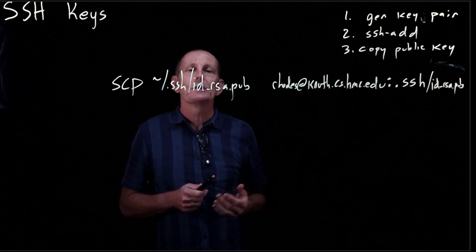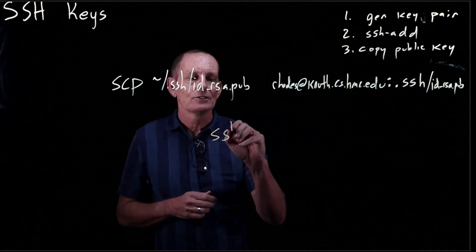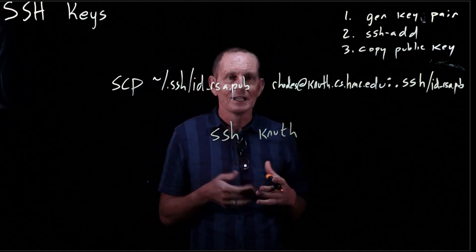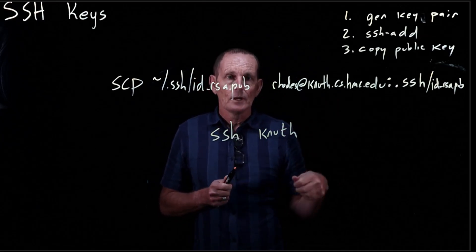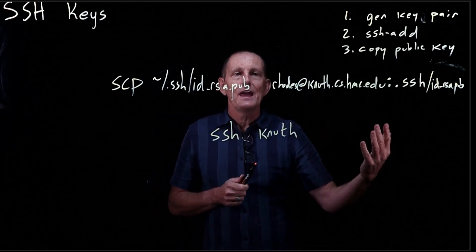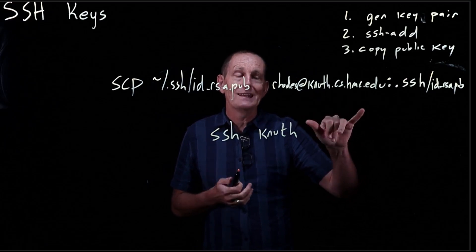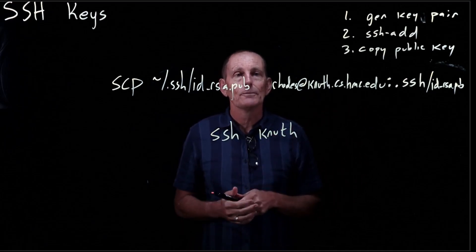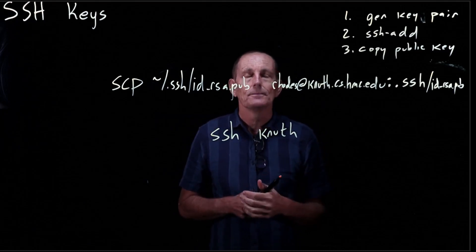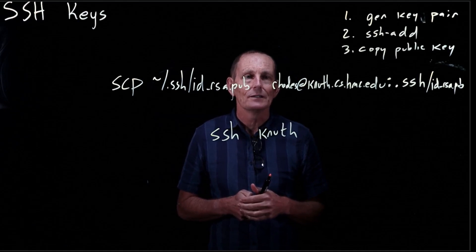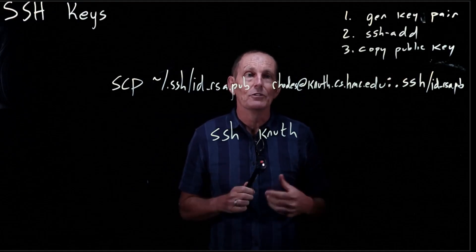But once that's there, we should be able to log into knuth without having to provide any password. What happens is when we do something like SSH to knuth — which because of my config is the same as roads@knuth.cs.hmc.edu — it's going to, on knuth, look for any public keys and then provide a challenge: basically a random value back to my local SSH agent, asking whether I can sign that random value with the associated private key. And if I can, knuth will verify using the public key that it was a correct signature, and I've proven my identity and can log in.